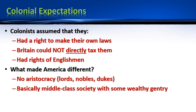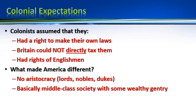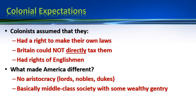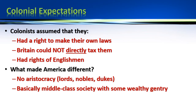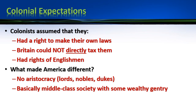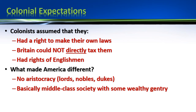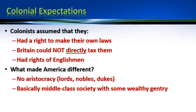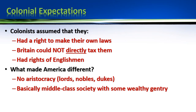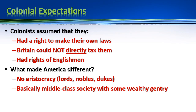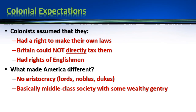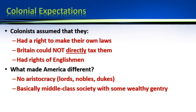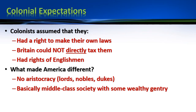America is essentially a middle-class society, meaning most people are kind of in the middle economically. There are vast numbers of poor people and vast numbers of enslaved people, and then some wealthy people on top — the gentry, which is another word for elites or rich folks. But a lot of people fall kind of in the middle — neither very poor nor very wealthy.